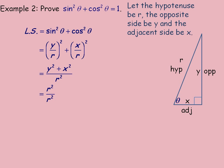From the Pythagorean theorem, y² + x² equals r². Looking at the right triangle, y and x are the two shorter legs, and r is the hypotenuse, so y² + x² = r². We substitute r² in place of y² + x², giving r² / r². Something divided by itself is always 1 — the only exception is you cannot divide zero by itself. So the identity is complete: sin²θ + cos²θ does equal 1.